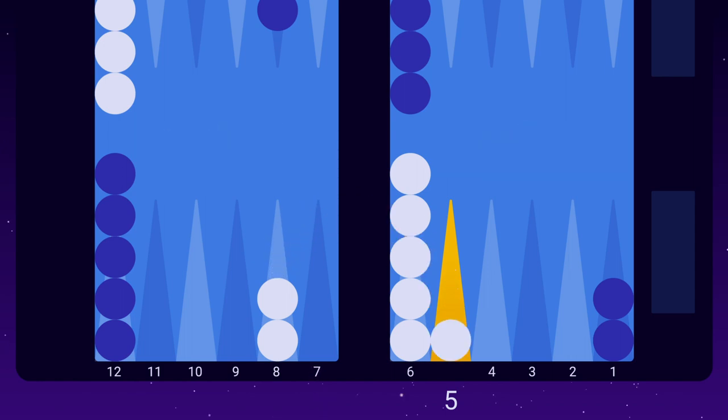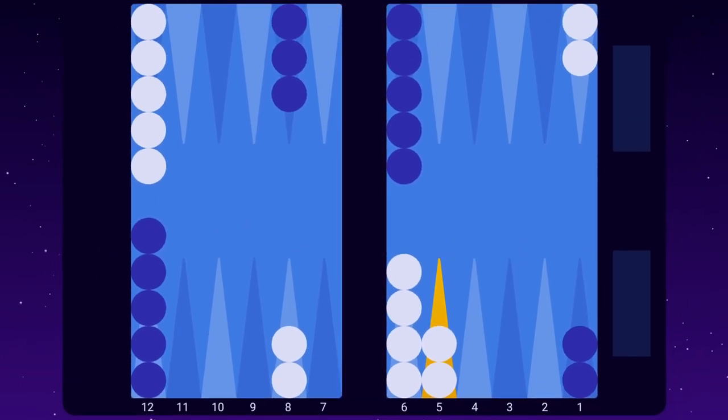Furthermore, by making the five point, you usually get to unstack the heavily stacked six point. All in all, this is a much more efficient use of your checkers.